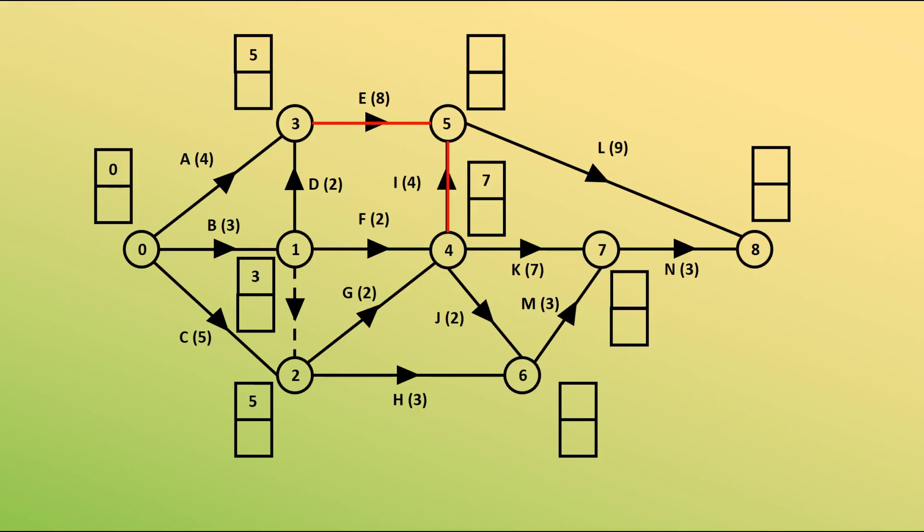Node 5 has two activities going into it, so 5 plus 8 is 13. 7 plus 4 is 11. We want the bigger of those, so 13 is the time there. Node 6 has J and H going into it. 7 plus 2 is 9. 5 plus 3 is 8. 9 is the larger one.